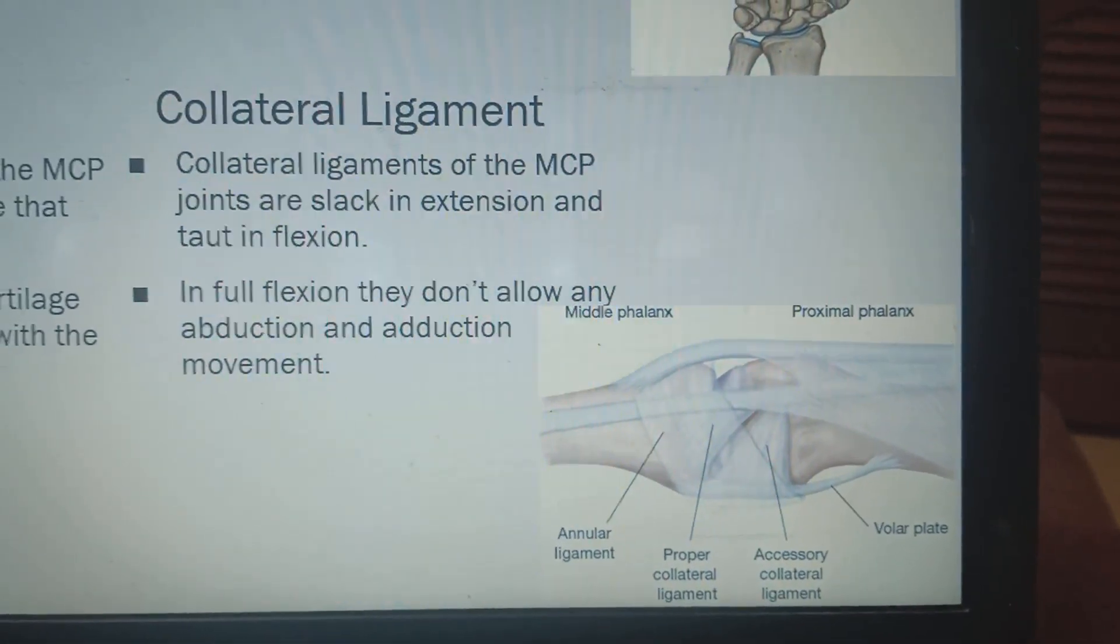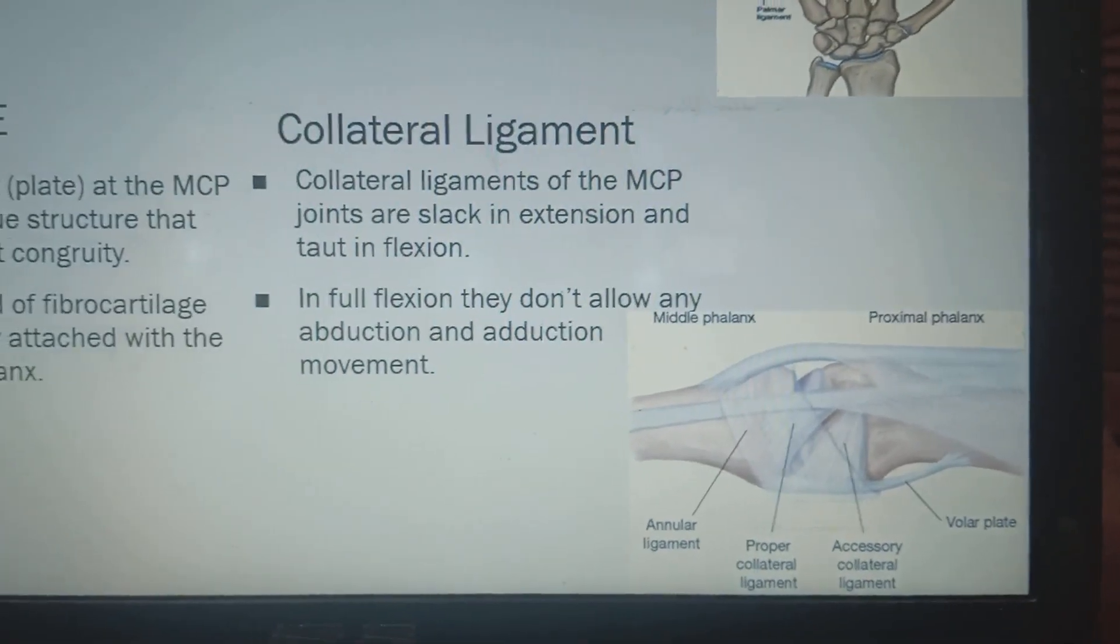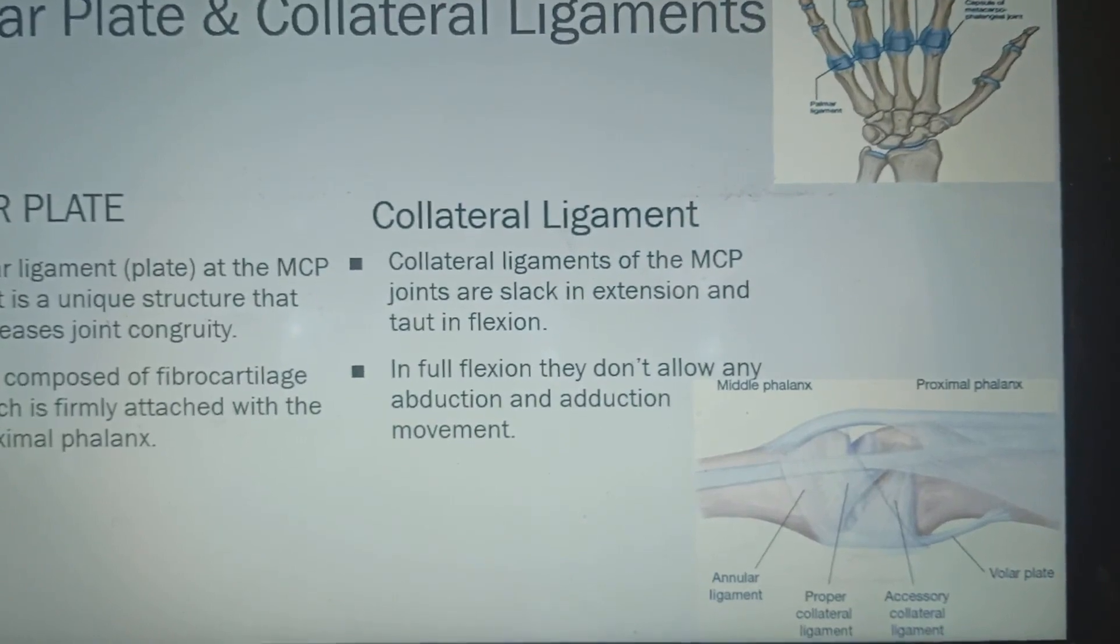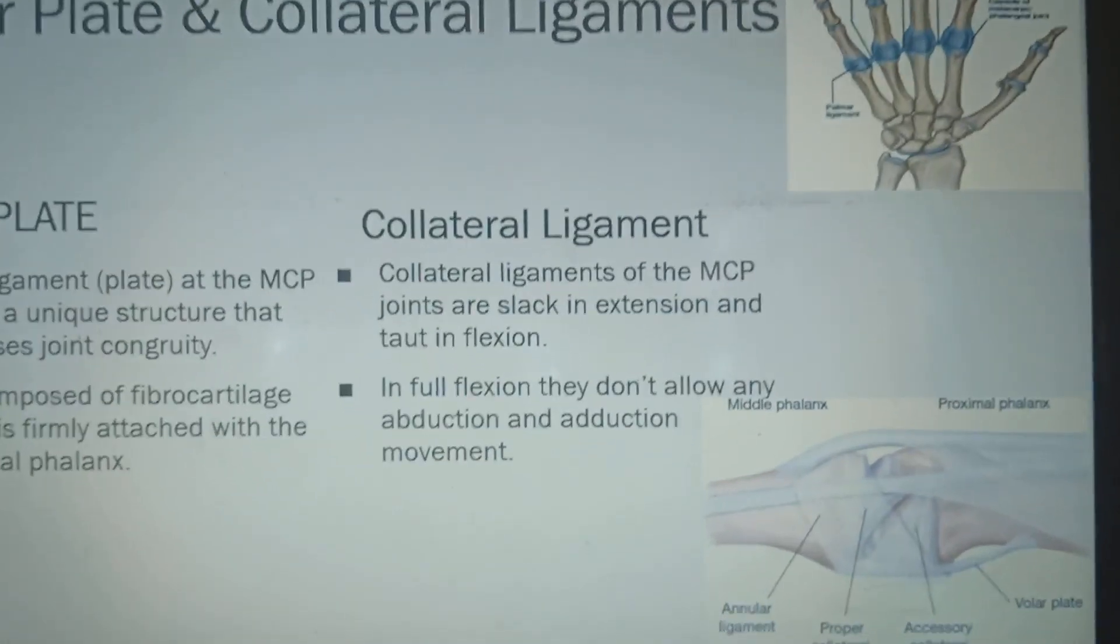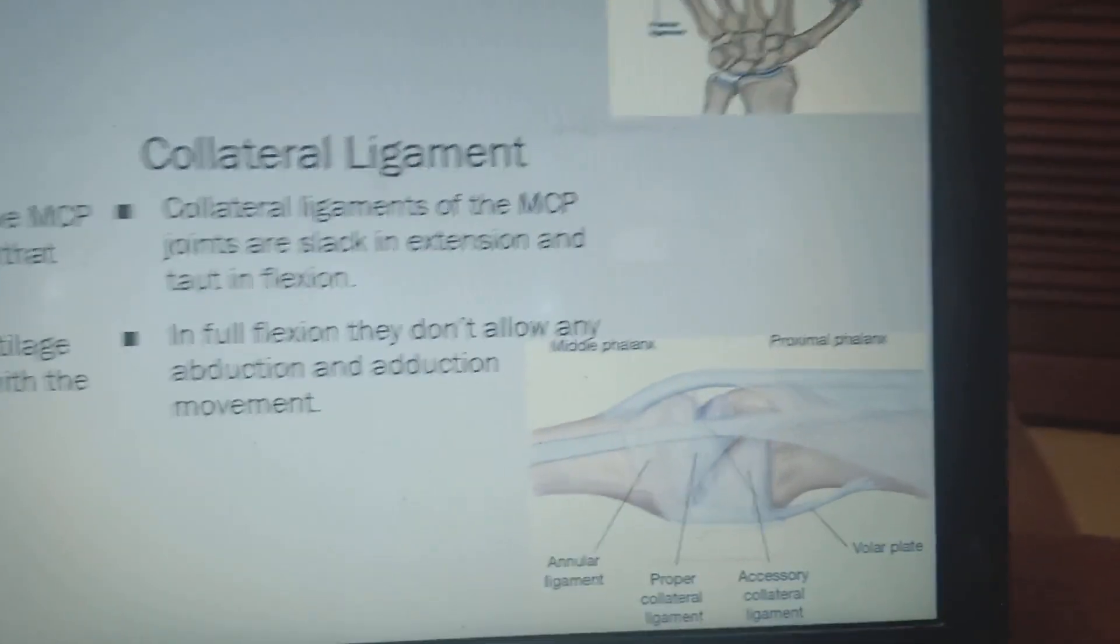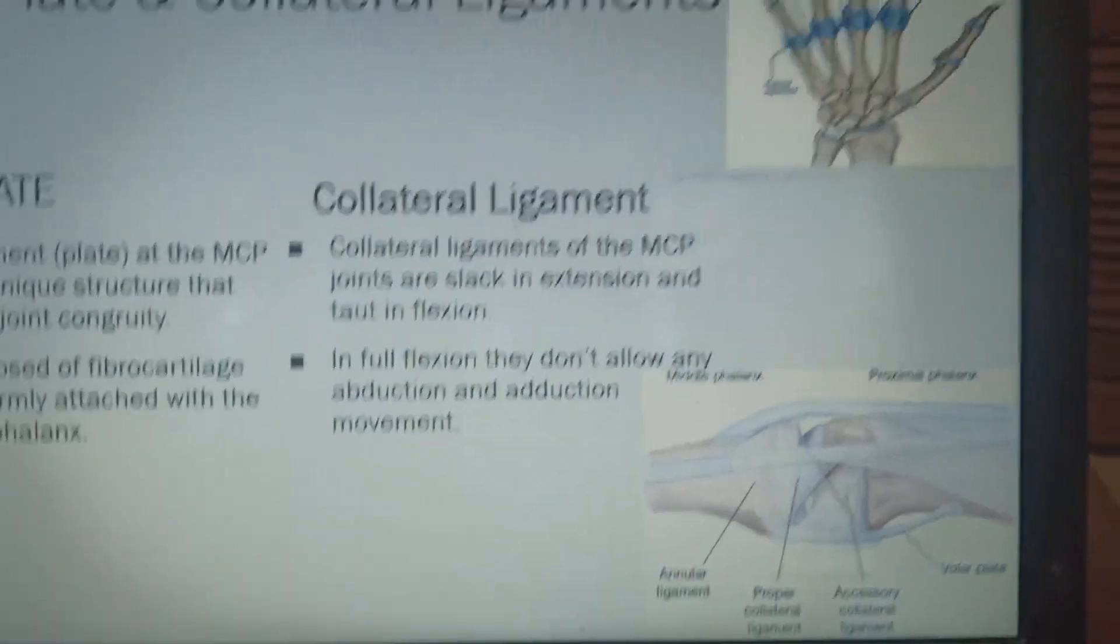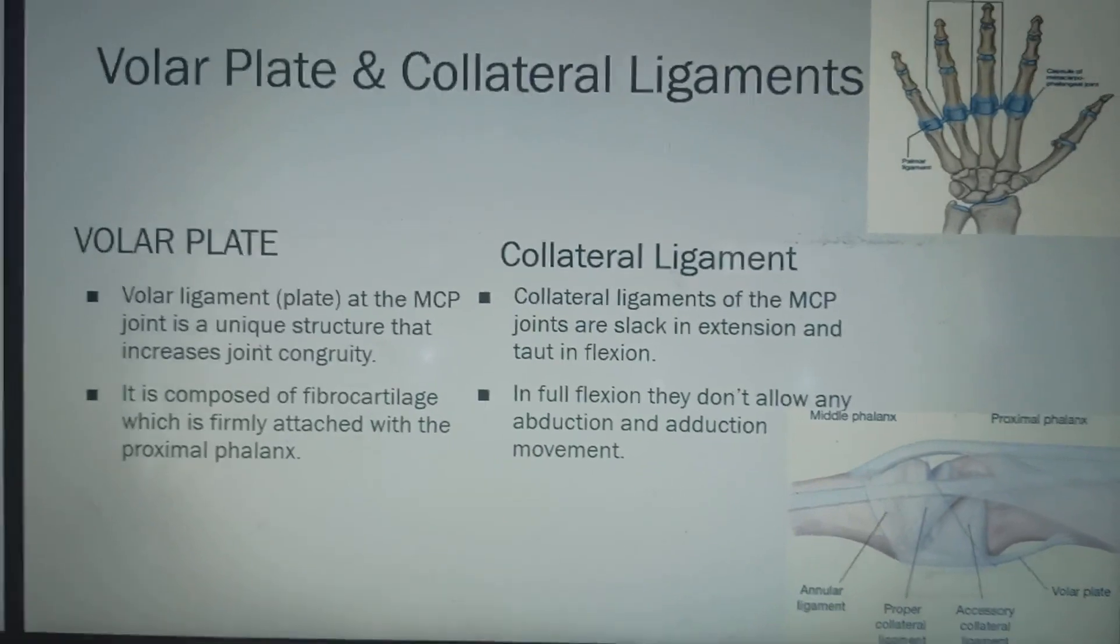And over there you can see these are the ligaments, collateral ligaments. Collateral ligaments means which will be in the lateral side will be known as lateral collateral ligament. Medial side will be medial collateral ligament. And a rounded ligament also known as annular ligament like we have seen over the radius and ulna.